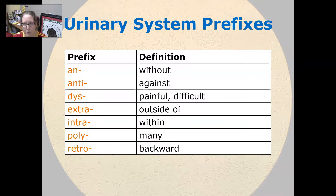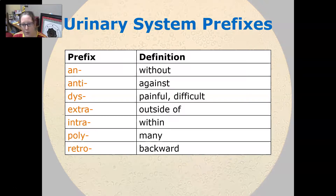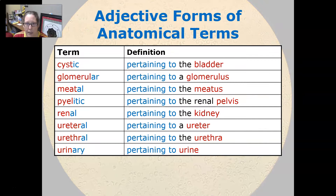Now let's look at some prefixes. An is without. Anti is against. Dis is painful or difficult. Extra is outside of and intra is within. Poly is many and retro is backward.